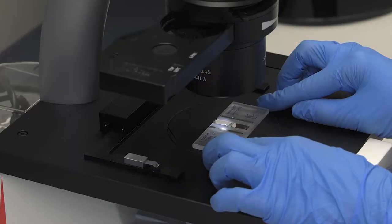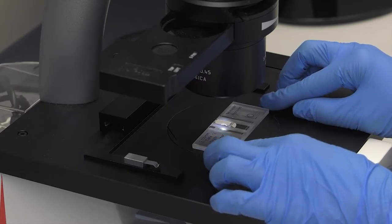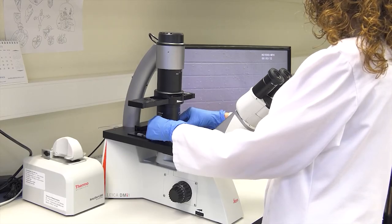The Neubauer chamber is a blood cell counting chamber that allows the microscope to determine the number of cells per unit volume of a liquid, which in the case of blood could be, for example, the number of erythrocytes per cubic millimeter.